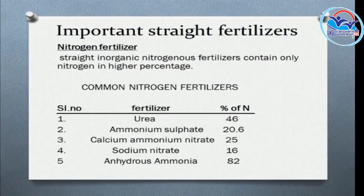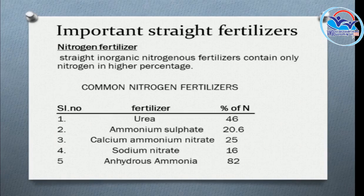Straight fertilizers are available as nitrogen fertilizers, phosphatic fertilizers, and potassium fertilizers. Nitrogen fertilizers include: urea at 46% N, ammonium sulfate at 22% N, calcium ammonium nitrate at 26% N, and sodium nitrate at 14% N.